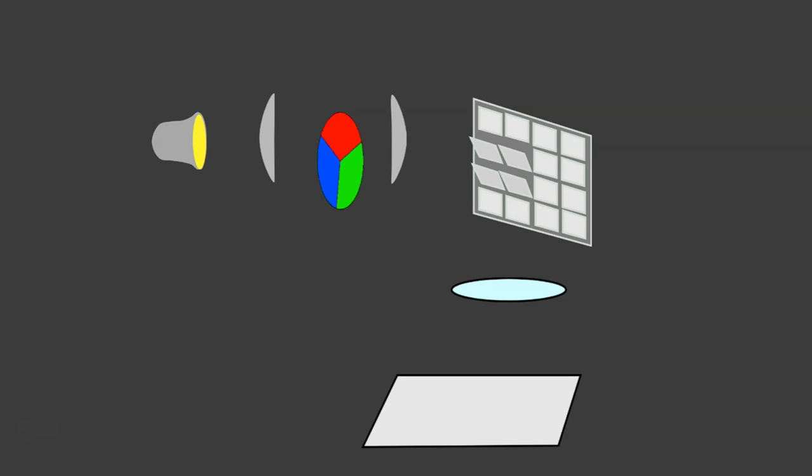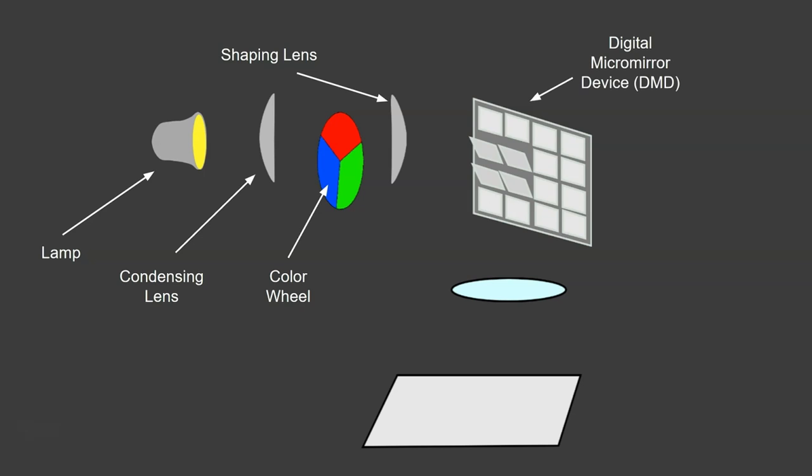Okay, so first of all let's introduce you to the components that you're going to see in the animation in a minute. We've got a lamp that shines a light out onto the condensing lens, which focuses the light onto a color wheel. The color wheel allows certain colors of light to pass through depending on how it's aligned.